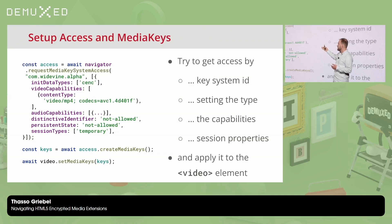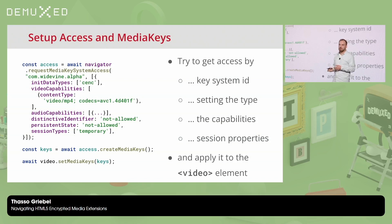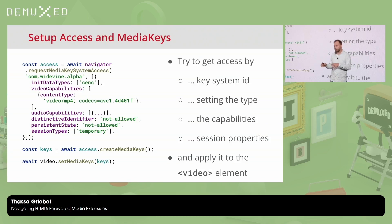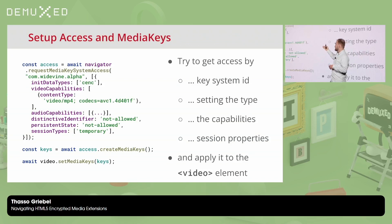Following that, you provide the init data types. This is an array, and the most common one is common encryption — CENC — which is what you typically use for fragmented MP4 in DASH or HLS. But there are other init data types depending on the key system. For FairPlay, you put SKD or SINF, depending on whether you use fragmented MP4 with EME and your own player, or AVPlayer with SKD init data. You also specify the capabilities — telling the system what to expect, such as an AVC1 video MP4 track and the corresponding audio, so it can return a CDM that supports your content.